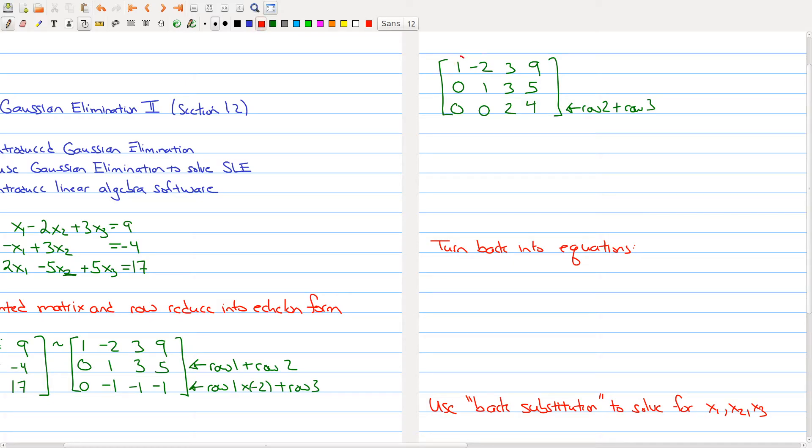We don't need this information, but just let me circle where all the pivots are. These are our leading non-zero entries. So what we want to do now is, remember, we solve our system of linear equations. So let's just turn all this back into equations so we can see what we ended up with. The first row tells me I have an equation x1 minus 2x2 plus 3x3 is equal to 9. The second equation gives me x2 plus 3x3 is 5. And then the last row gives me 2x3 is equal to 4.